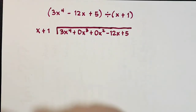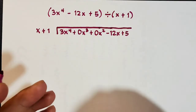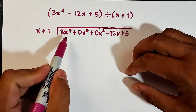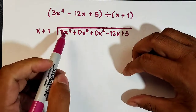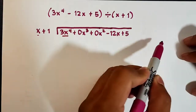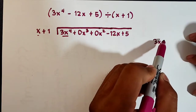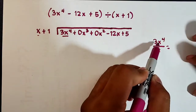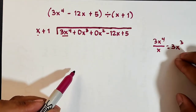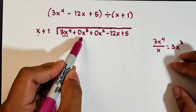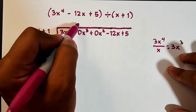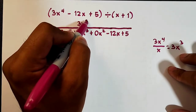Let's start the long division. The routine is: divide, multiply, and subtract. We divide first the leading term: 3x to the fourth power divided by x. That gives us 3x cubed. We put this at the top above 0x cubed, because they have the same degree. So we have 3x cubed — dividing step is done.